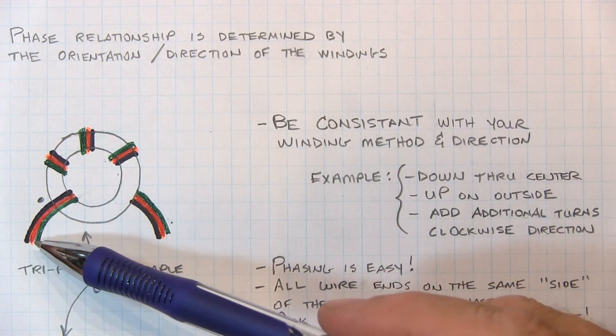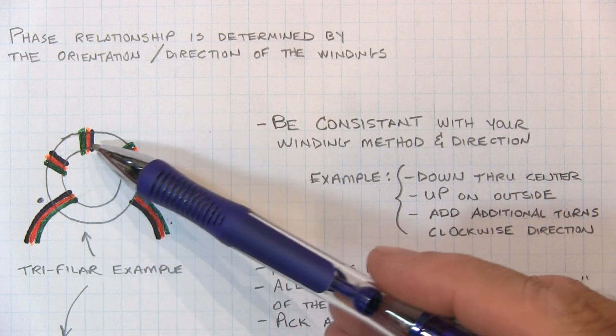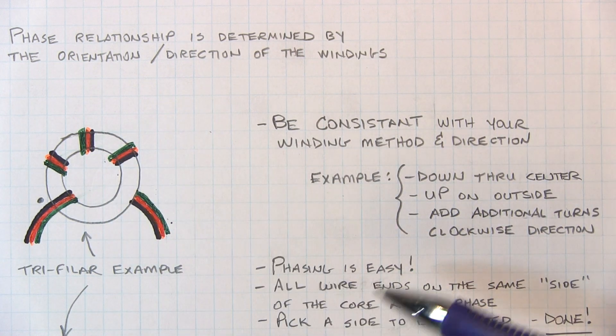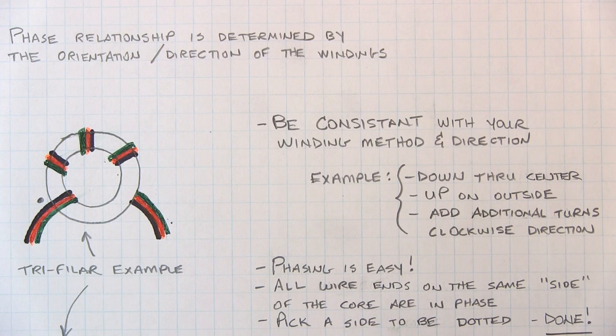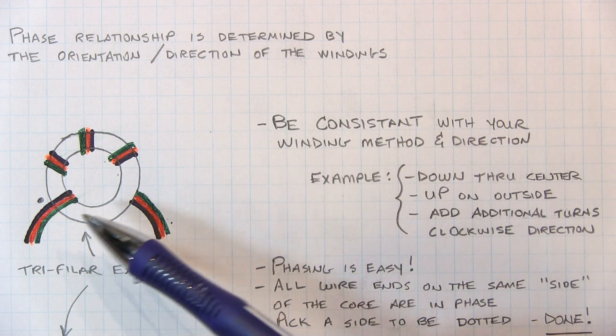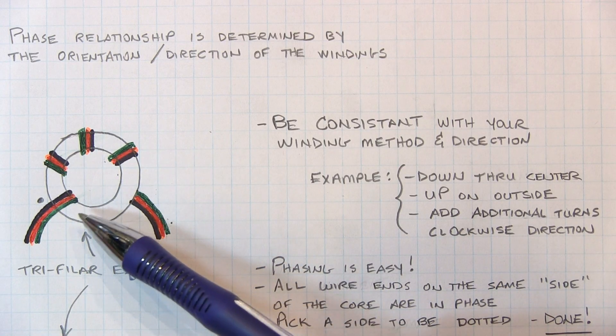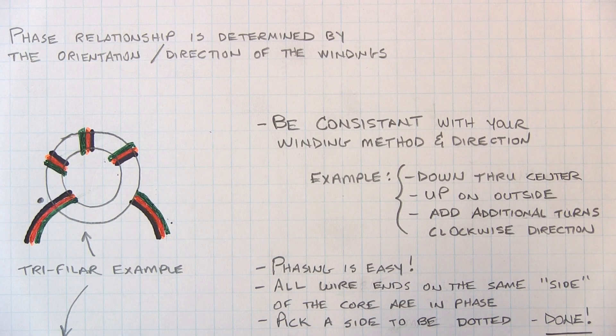Of course, if you twisted all these wires together before you wound them on the core, that whole issue of being consistent takes care of itself. Often times you might need to build a transformer that has a different number of turns for some of the secondary windings.